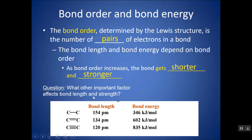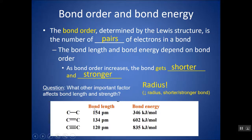Another important factor that affects bond length and strength is atomic radius. The smaller the radius, the closer those nuclei can get to each other because you have fewer electron shells, and therefore the bond is shorter. And as I said, anytime you have a shorter bond, it's going to be stronger — the bond energy goes up.